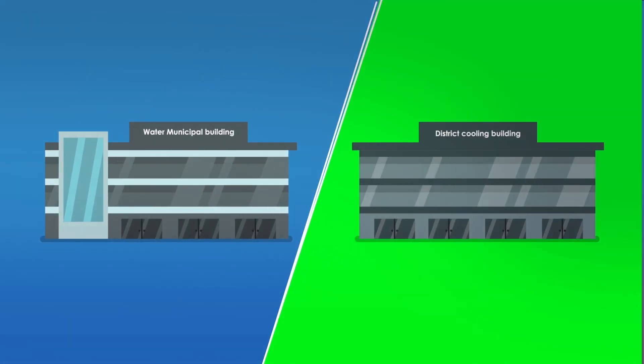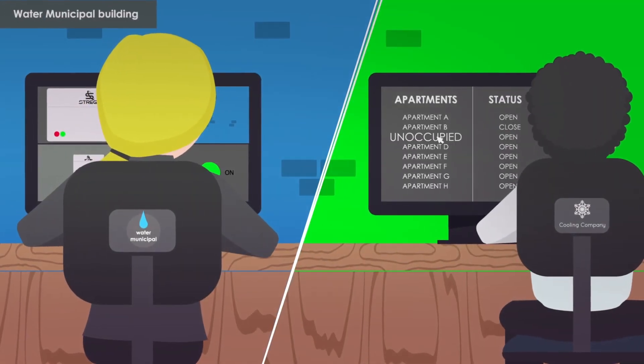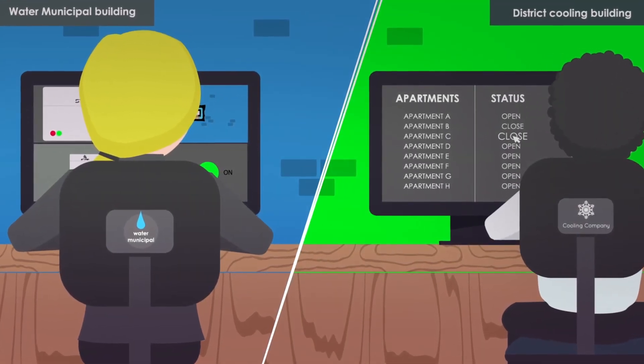The Strega smart valve is a unique tool to help water municipalities to optimize their networks or to enable district cooling companies to shut off cooling water in unoccupied properties.